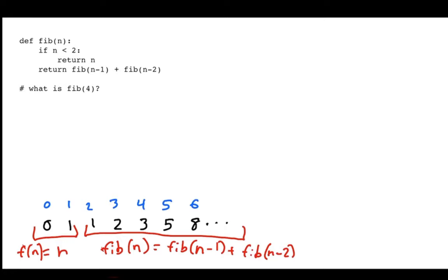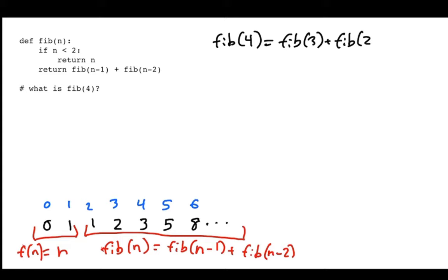So how could we trace through this? In particular, if I want to figure out what the Fibonacci of 4 is. Fibonacci of 4 equals what? Well, n is 4, and that's not less than 2, so I come down to the other case. That's going to be Fibonacci of 3 plus Fibonacci of 2, and that equals something I don't know yet. I need to solve some other problems, so I leave this problem hanging until I go solve those and then come back.